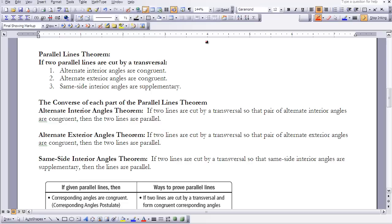And then we can also go the converse of that, and if we have the alternate interior or alternate exterior angles congruent to each other, then we can say my lines are parallel. And if our same side interior angles are supplementary, then our lines are parallel.